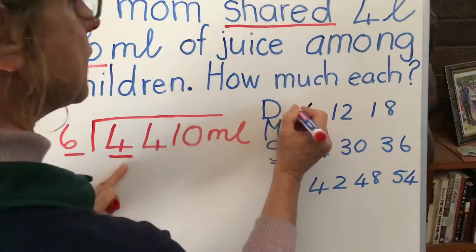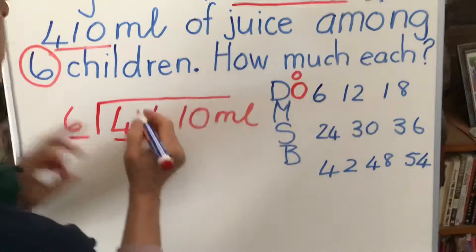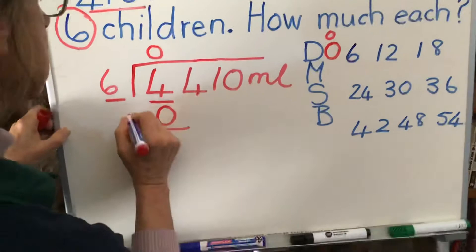Remember if this number is less than the multiples we have to put 0. So it's 0 times 6 is 0. Let's minus it off. 4 minus 0 is 4. That's right.